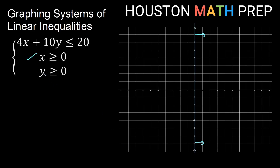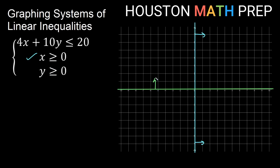For y is greater than or equal to 0, just the equal part — y equal to 0 gives us the x-axis, since the x-axis crosses the y-axis at 0. The greater than part tells me I need y values greater than this, which would be above this line. So anything above this line would be included.